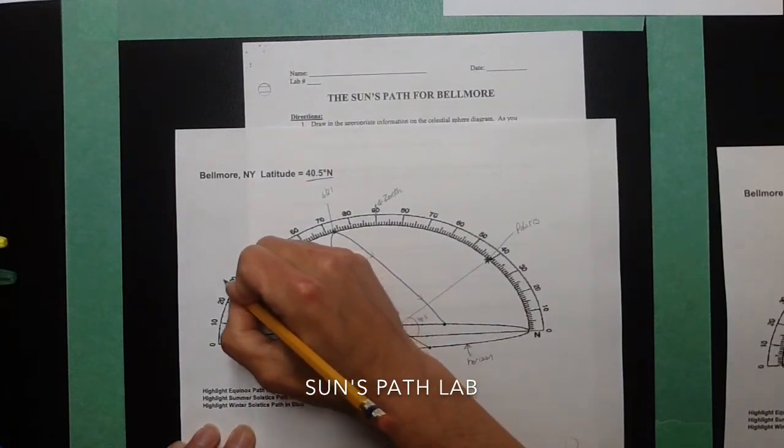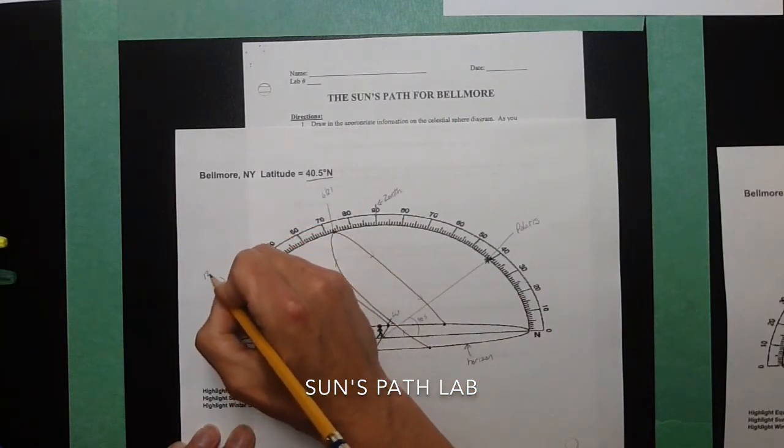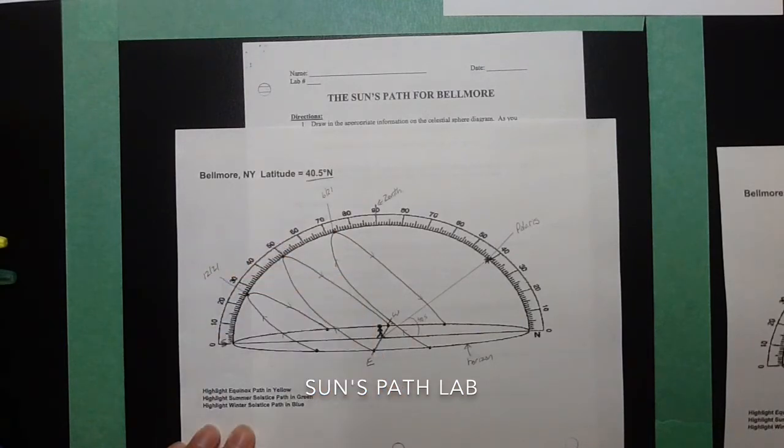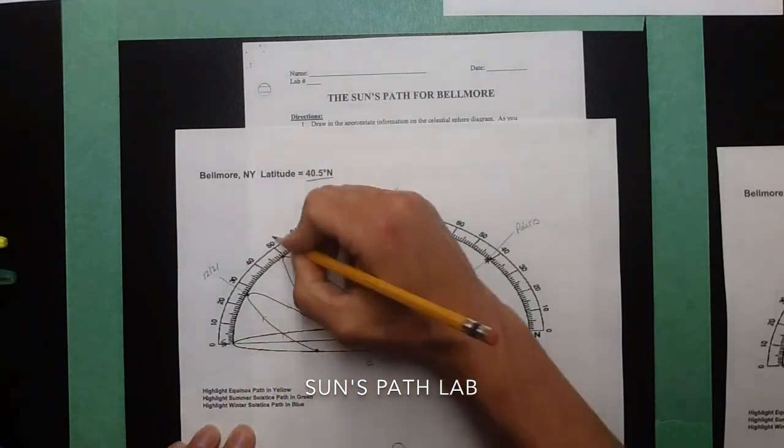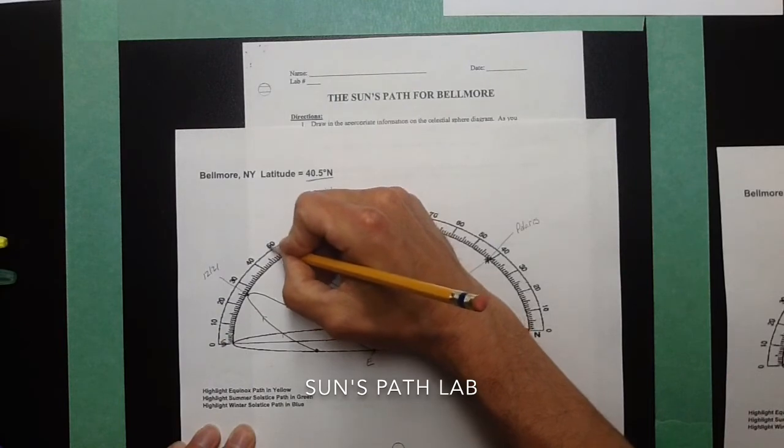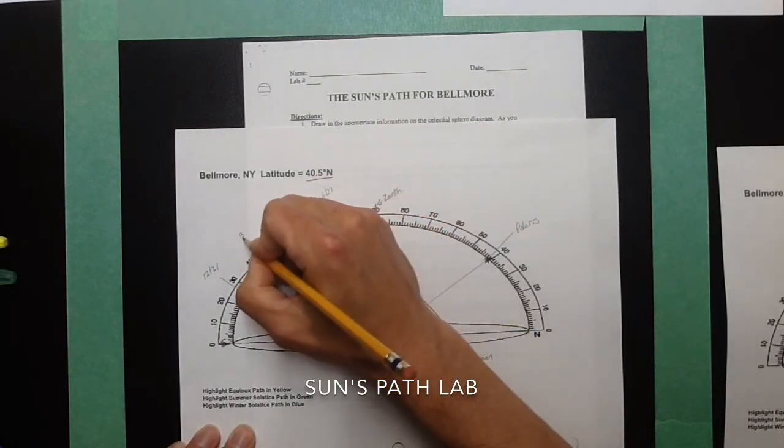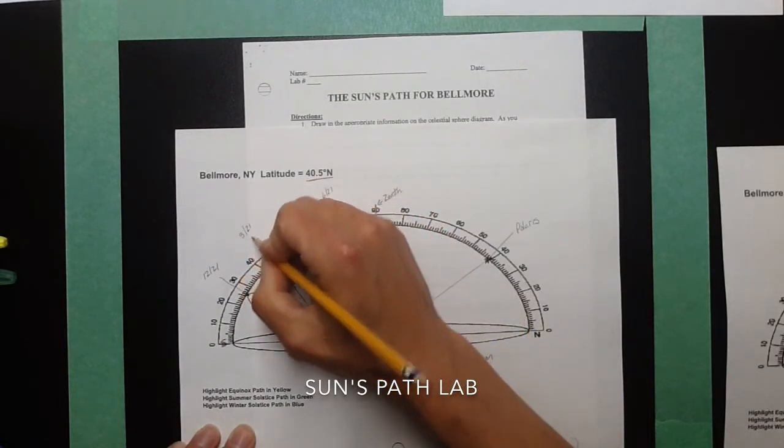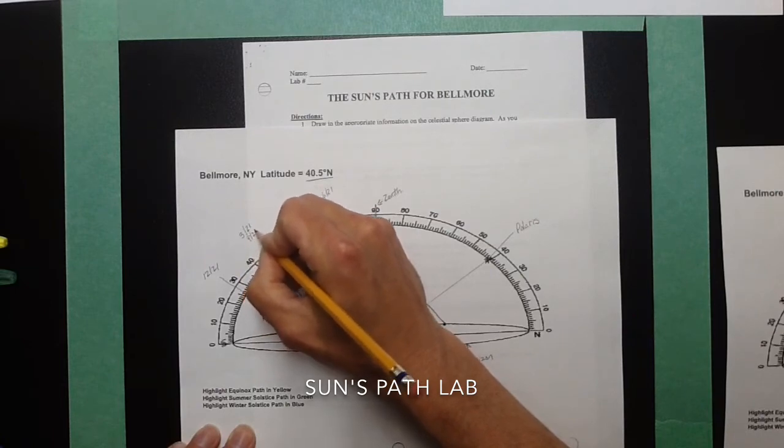The winter path, which is going to be down here, is 1221. Now, the path in the middle is going to be both equinoxes. That's going to be 321 and 923.